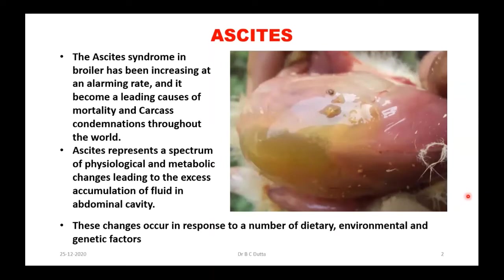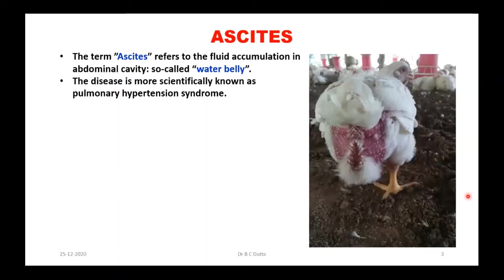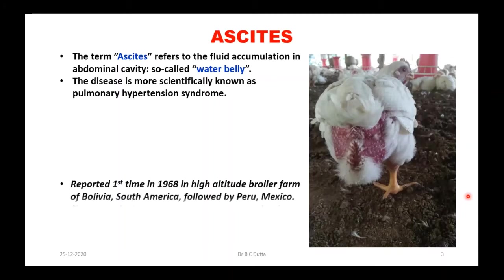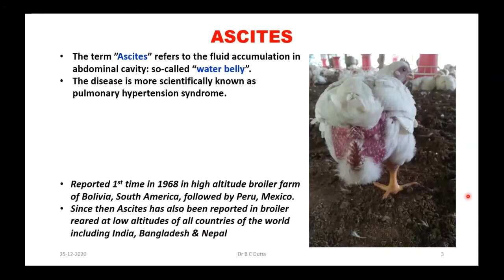There are dietary, environmental and genetic factors. The term ascites refers to fluid accumulation in the abdominal cavity — 'water belly.' The disease is more scientifically known as pulmonary hypertension syndrome. It is not an infection; it is a syndrome. The disease was first reported in 1968 in Bolivia in Latin America, followed by Peru, Mexico and that area at high altitude.